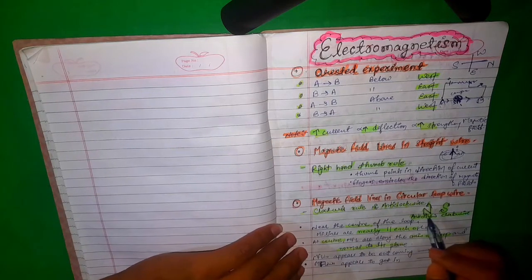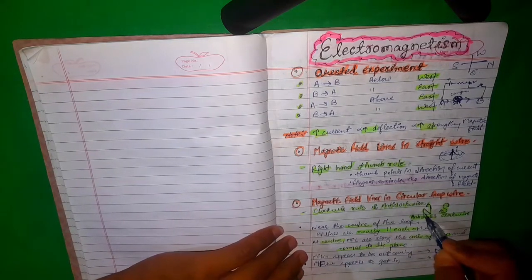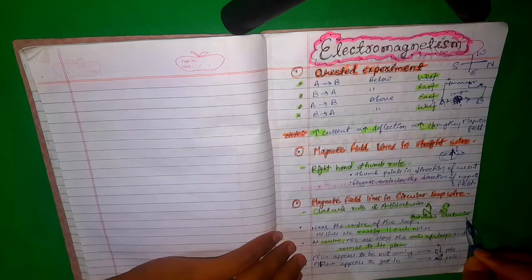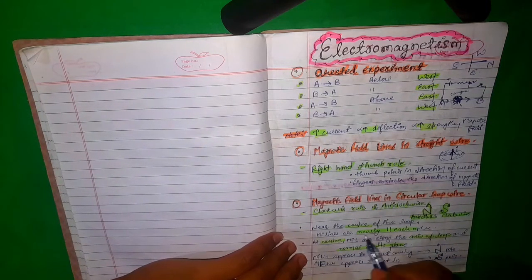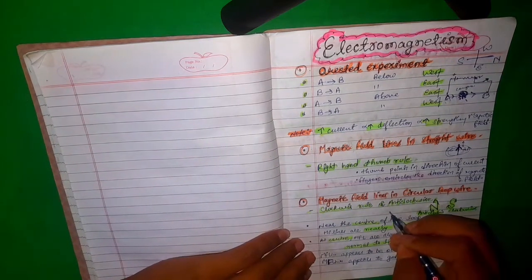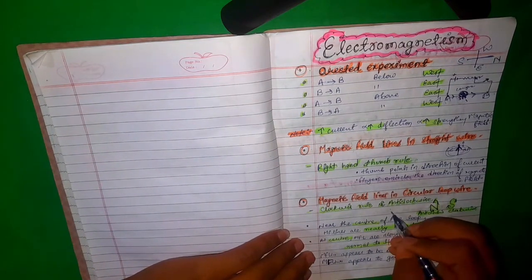Now, magnetic field lines in a circular loop wire — for a circular loop wire we use the clockwise or anticlockwise rule. Anticlockwise represents the north pole and clockwise represents the south pole.